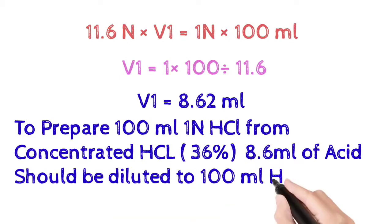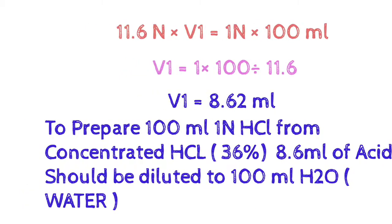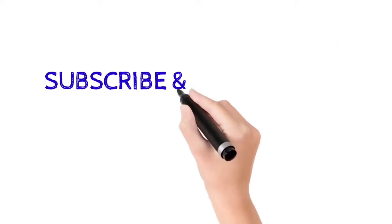To prepare 100 ml of 1 normal HCl we require 8.6 ml of acid which should be diluted to 100 ml.